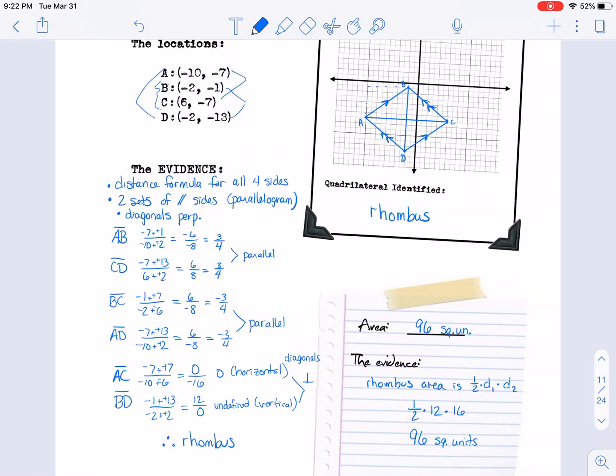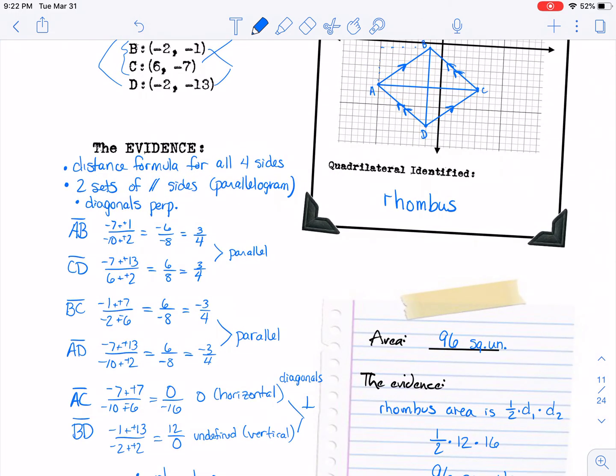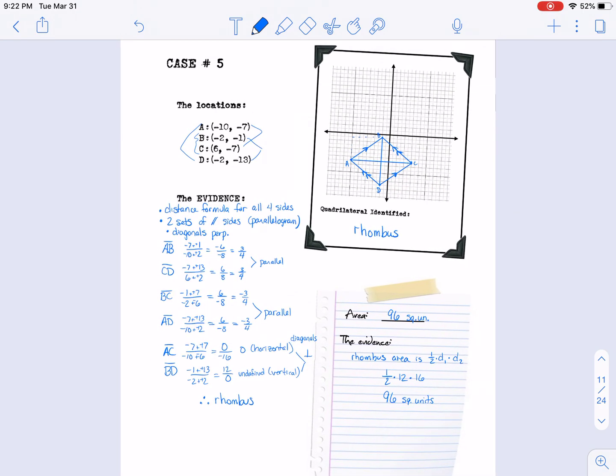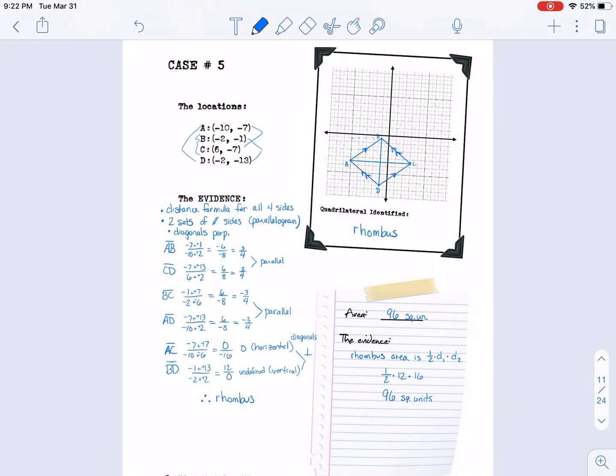So that's the sort of thing that I'm looking for. You're not always going to have the exact same evidence. You're not always going to have to find the slopes. Sometimes you need to find the distances, the lengths of the sides. If you're working on case 2 and case 3 and have any questions, feel free to email me and I'll get back to you as quickly as I can. Thank you. Have a great day.